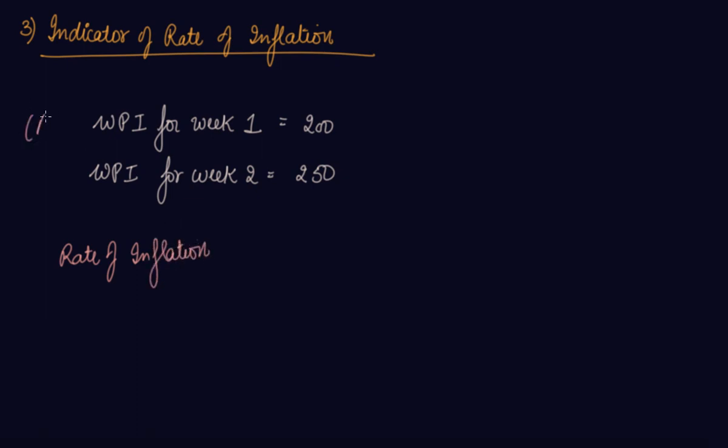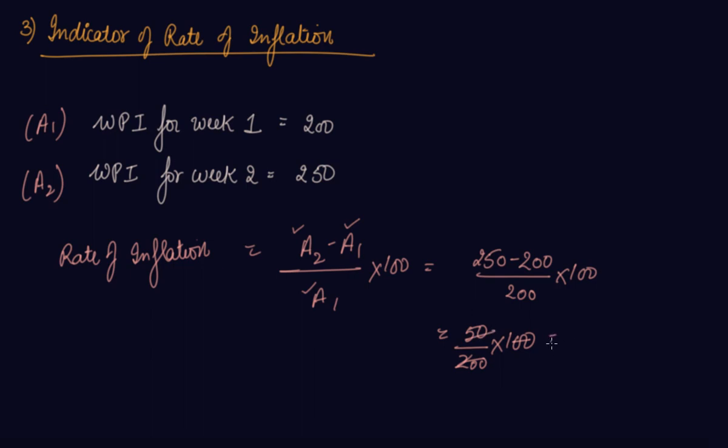Let's take week 1 as A1 and week 2 as A2. The rate of inflation equals (A2 - A1) / A1 × 100. So, (250 - 200) / 200 × 100 equals 50/200 × 100 equals 25%. The rate of inflation is 25%, which means inflation has increased by 25% from week 1 to week 2. It is the best indicator of rate of inflation.